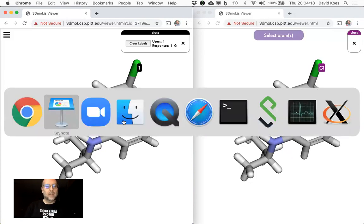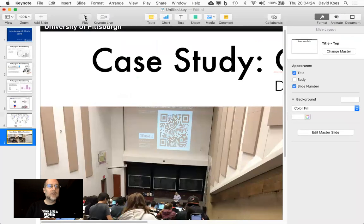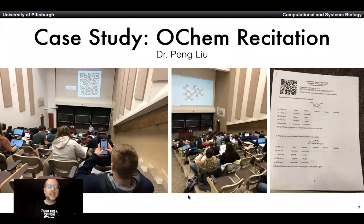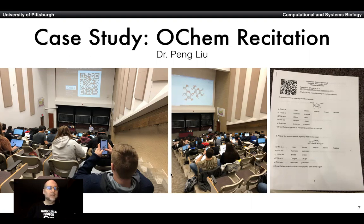We deployed this as a test in a large organic chemistry recitation taught by Dr. Peng Liu. The way he structured this is he actually presented a QR code on screen and in the workshop that had the URL of the session baked into it. So the students didn't even have to type anything — they could just hold up their phone and it would automatically load the session, which he had already created at the beginning of class. Then he would ask them questions about the molecule, and you can see them using their laptops and phones to click on different atoms and answer questions.